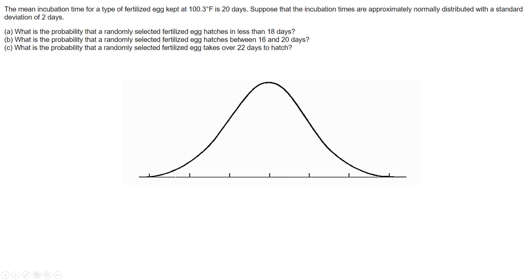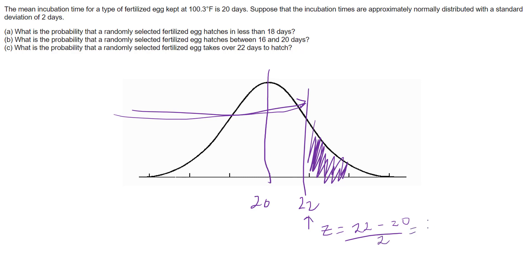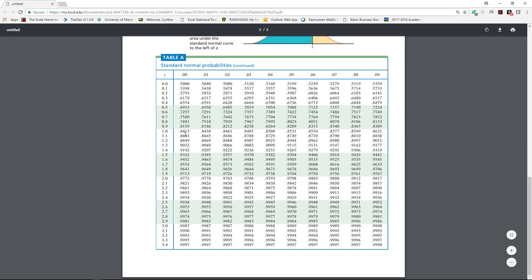The last question asks: what is the probability it takes over 22 days? Drawing the mean at 20, we want the area to the right of 22. The z-table gives cumulative area to the left, so we compute z = (22 − 20) / 2 = 2/2 = 1.